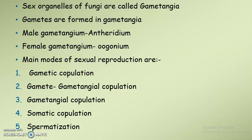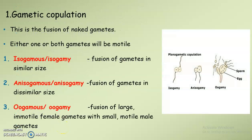Next we can see the main modes of sexual reproduction in fungus. They are: gametic copulation, gametangial copulation, somatic copulation, and spermatization. In gametic copulation, we can see fusion of naked gametes, and here the gametes are either motile or non-motile — that is, one will be motile or both will be motile.